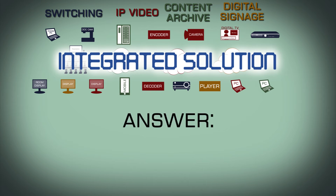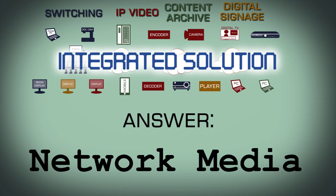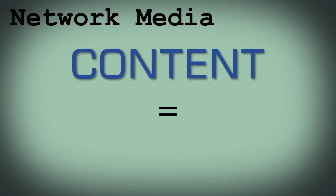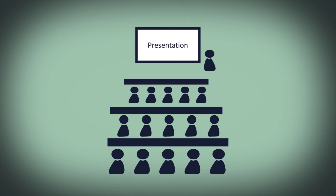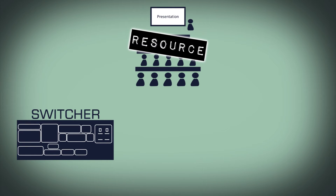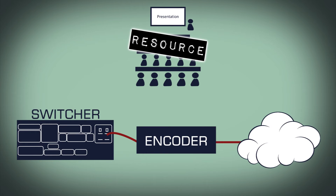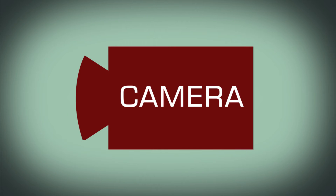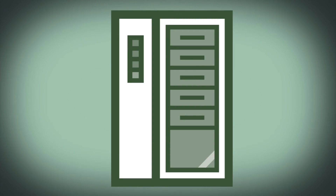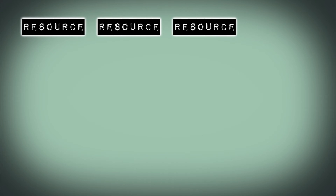The answer is something called Network Media. Instead of walling off your content by application, Network Media considers any video content as a network resource. The video output from your conference room would be a resource — simply use one of the switcher outputs and add an encoder to make it accessible anywhere on the network. Video cameras in classrooms and meeting rooms would also be network resources. Want to stream the news? Add digital TV as a resource. Have recorded content? Add a storage server and your videos become network resources.